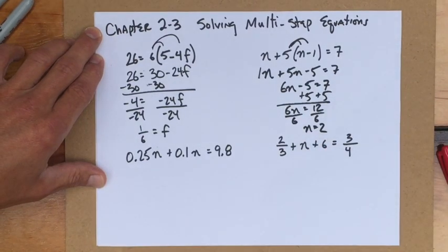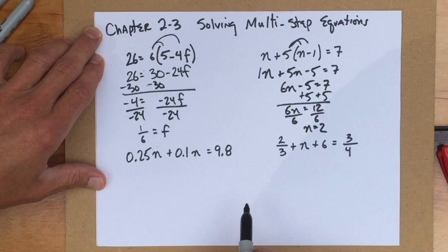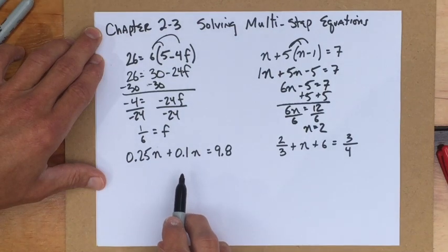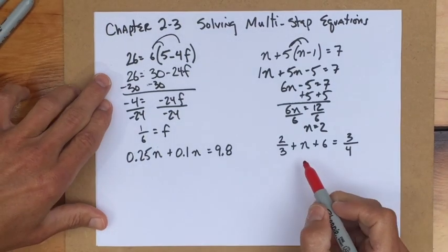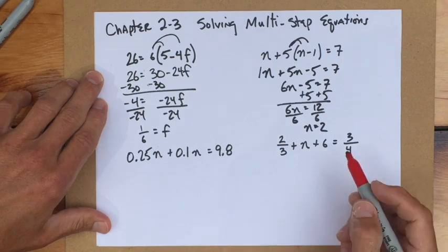Now, I'd mentioned this two videos ago, I believe, that there was a time when we'd want to clear out fractions. And I'm going to show you how to do that here today, again. And I'm going to show you how to deal with clearing out decimals. And because these are a little different and unique, and I like them, I'm going to switch colors. I'm going to go to the fraction one first, one in the bottom right-hand corner.